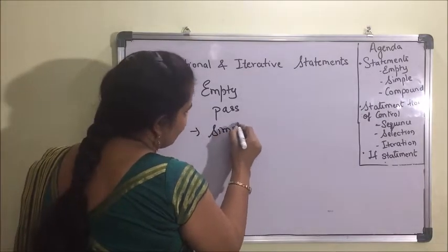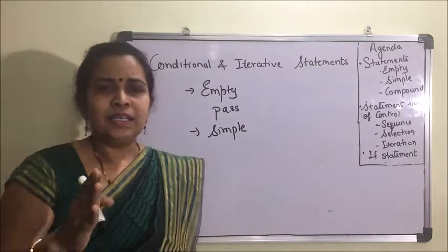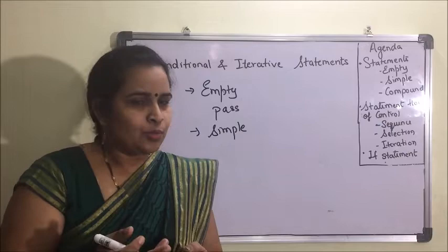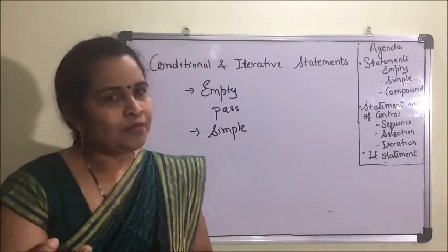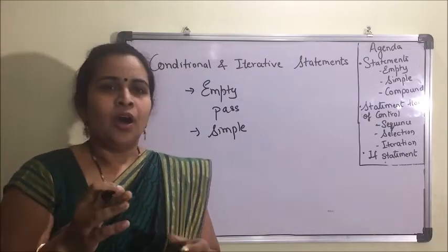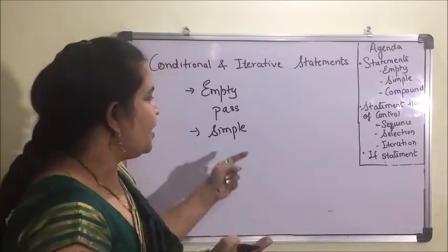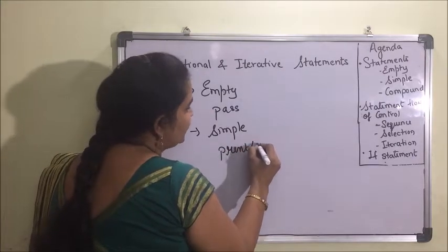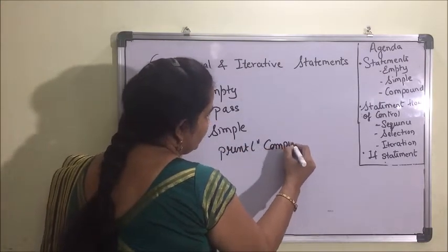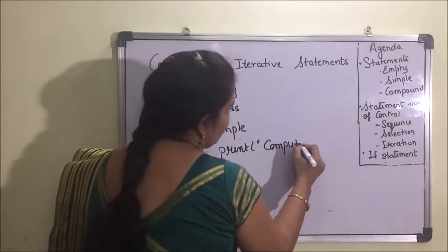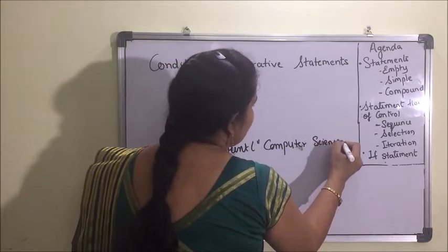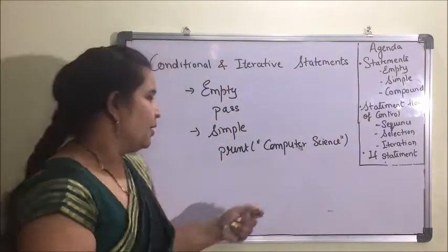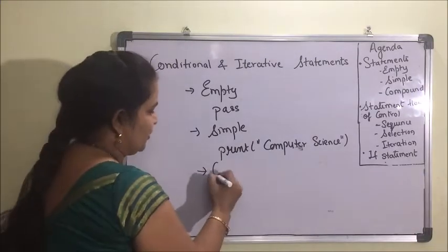The next is a simple statement — it is a one-line statement. For example, taking input from the user using int(input('Enter number')), or printing anything. All commands written in a single line are simple statements. For example, writing print('Computer Science') is a simple statement of a single line.